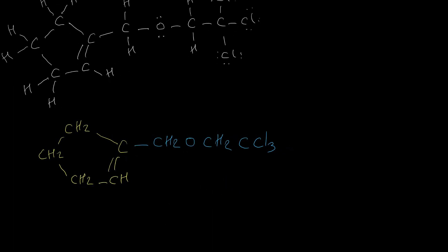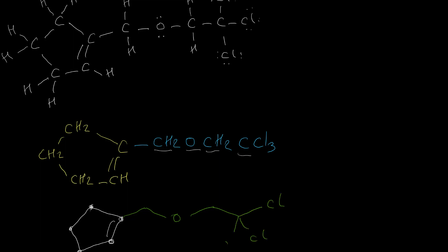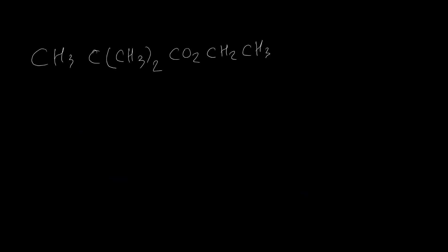For the cyclic pentagon part, you just draw a pentagon and put a double bond in it — each intersection again shows a carbon. Then for the remaining chain we have carbon, oxygen, carbon, carbon, shown in that sequence, and on that last carbon we have three substituents. Those are the condensed and skeletal structures for this example.